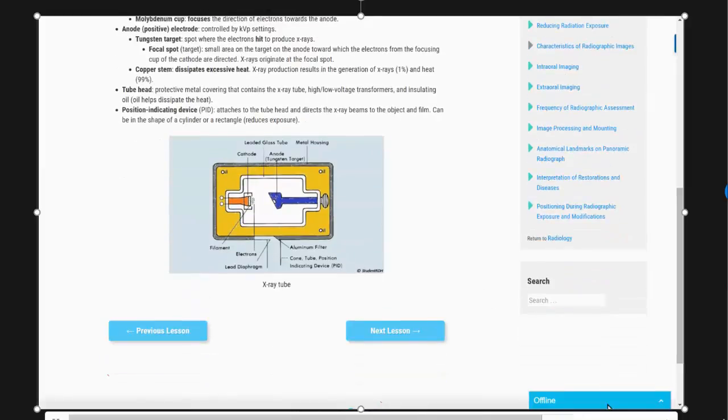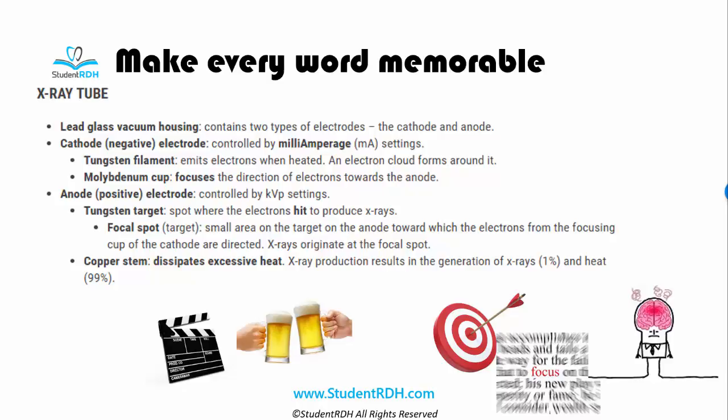Let me show you how we can do better together. If you see this piece of information about the x-ray tube — how electrons move from the cathode to the anode — this is complicated. I think every single dental hygiene student struggles to remember this, even professors trying to explain it. Let me make it very easy for you. It takes a bit of effort because we are going to use two rules: number one, substitution; number two, connect — in order to make the information more memorable so everything sticks in your brain better.